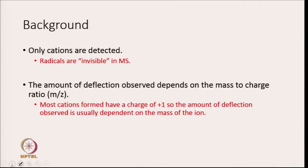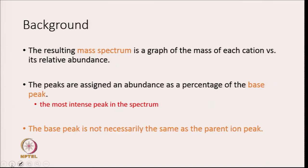In the mass spectrometer, only cations are detected; radicals are invisible. The amount of deflection depends on the mass-to-charge ratio, m/z. Most cations formed have a charge of +1, so the amount of deflection observed is usually dependent on the mass of the ion. The resulting mass spectrum is a graph of the mass of each cation versus its relative abundance — you are plotting relative abundance versus the mass of each cation.